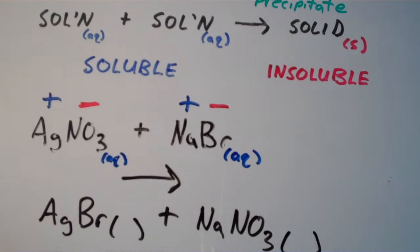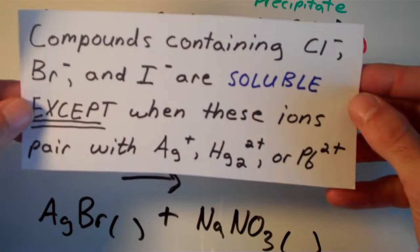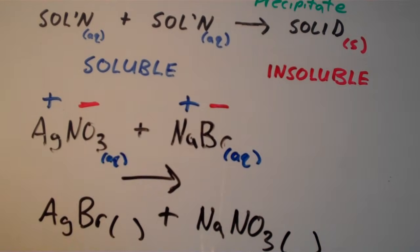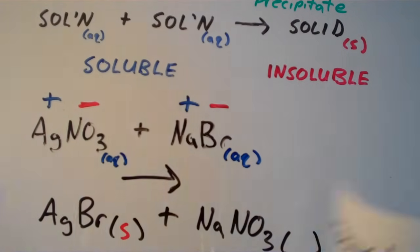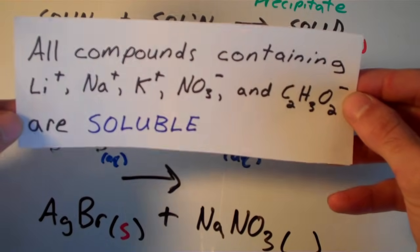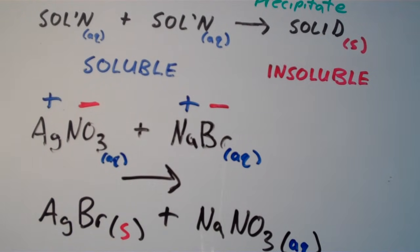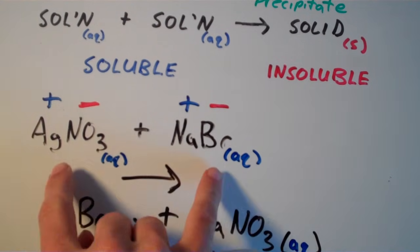Let's determine the states. For AgBr: the bromide rule says bromide is soluble except when paired with silver ion — so AgBr is insoluble, meaning it's a solid, S. For NaNO3: the nitrate rule says nitrate is always soluble with no exceptions, so we attach aqueous to NaNO3. This is indeed a precipitation reaction because we have a solid precipitating out when we mix the two solutions together.